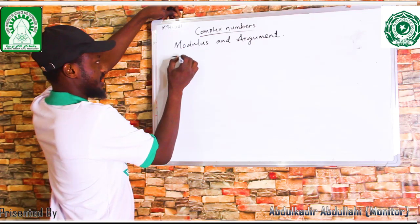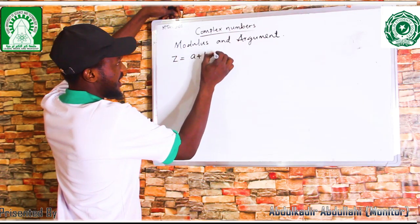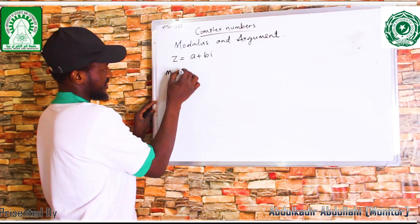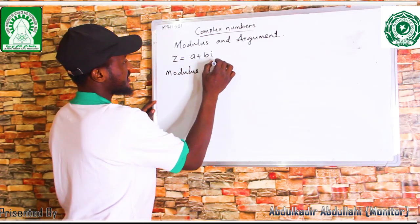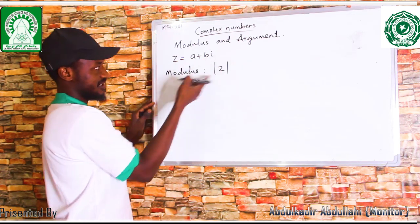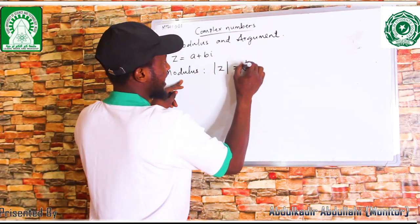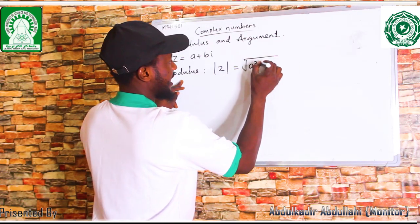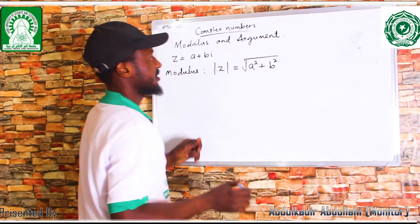We are given a general complex number z = a + bi. The modulus — whenever we see this notation, it's the modulus — and this modulus is expressed as the square root of the real part squared plus the imaginary part squared.